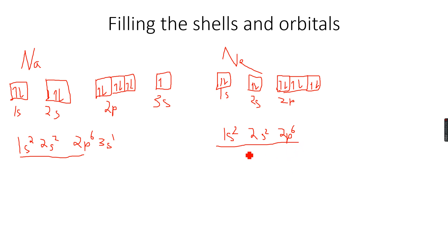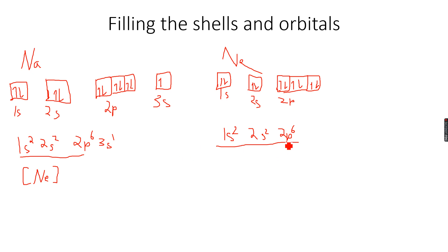Now, if you compare neon and sodium, you can see that 1s² 2s² 2p⁶ is the same for both up to that point. So we can also write sodium's electronic configuration as [Ne] 3s¹, where [Ne] in square brackets represents 1s² 2s² 2p⁶ — the full electronic configuration of neon.